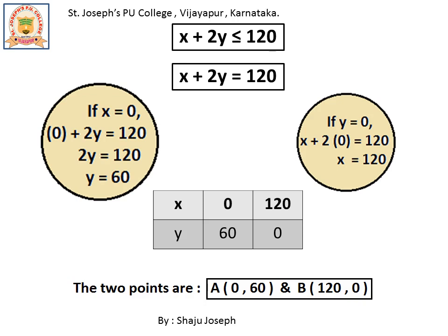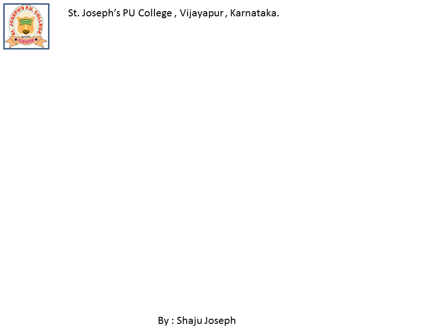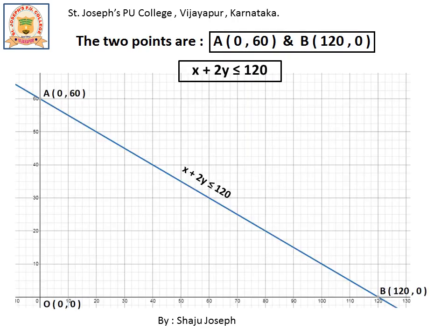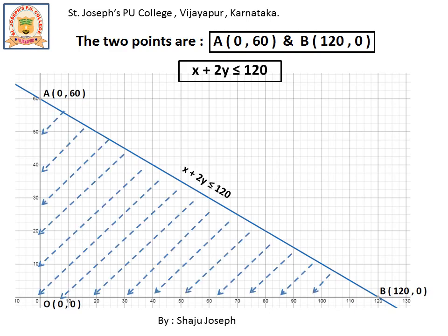Let us arbitrarily name the two points as A and B. Plotting these two points on the graph and connecting them gives the line x plus 2y equal to 120. To identify all the points which satisfy the inequality (less than or equal to 120), we substitute the origin values x equals 0 and y equals 0 into the inequality. We get 0 less than or equal to 120, which is a true statement. That means the origin is contained in the feasible region, so we shade the lower left region.